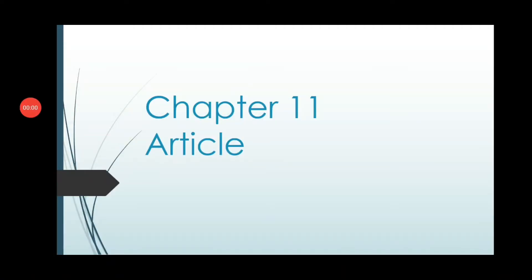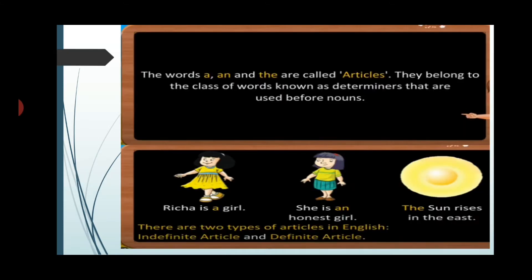So you know what articles are? The words a, an, and the are known as articles. They belong to the class of words known as determiners that are used before nouns. So these words a, an, and the are articles and they are used before nouns. For example: Richa is a girl — here a is an article. She is an honest girl — here an is an article. The sun rises in the east — here the is an article.